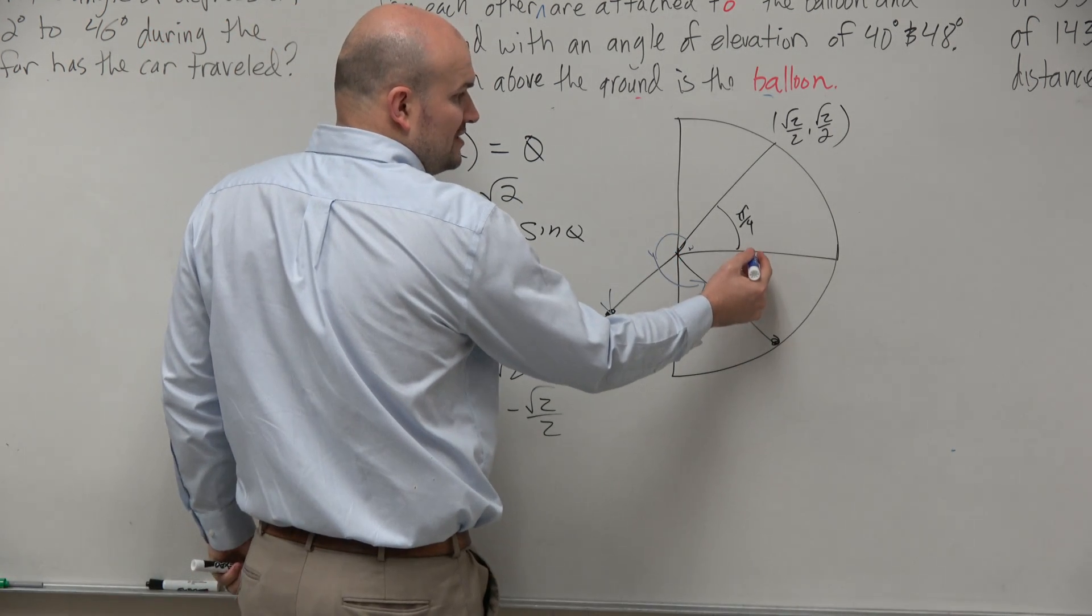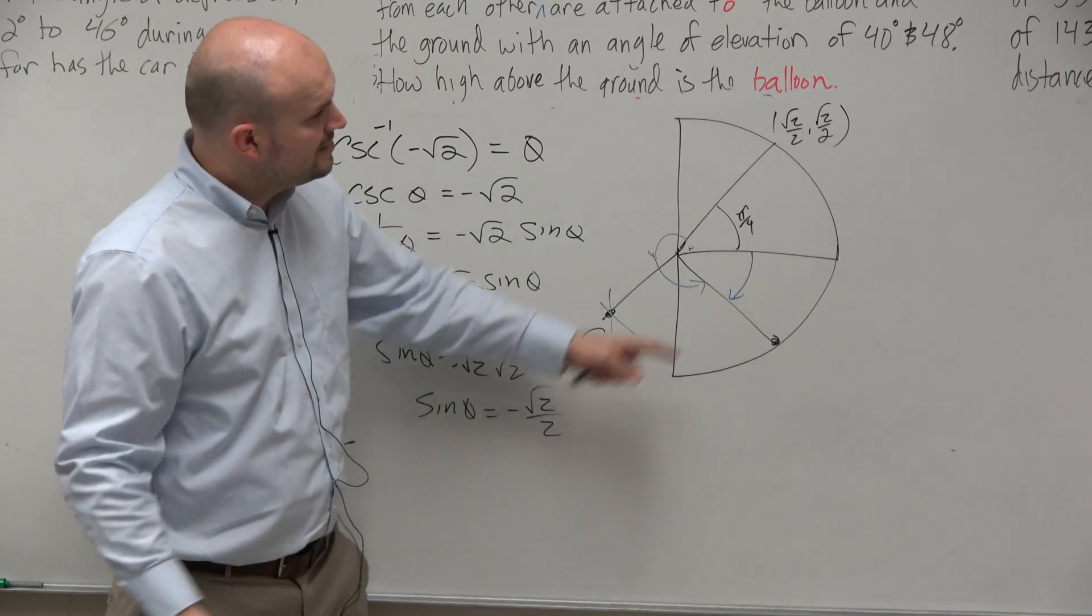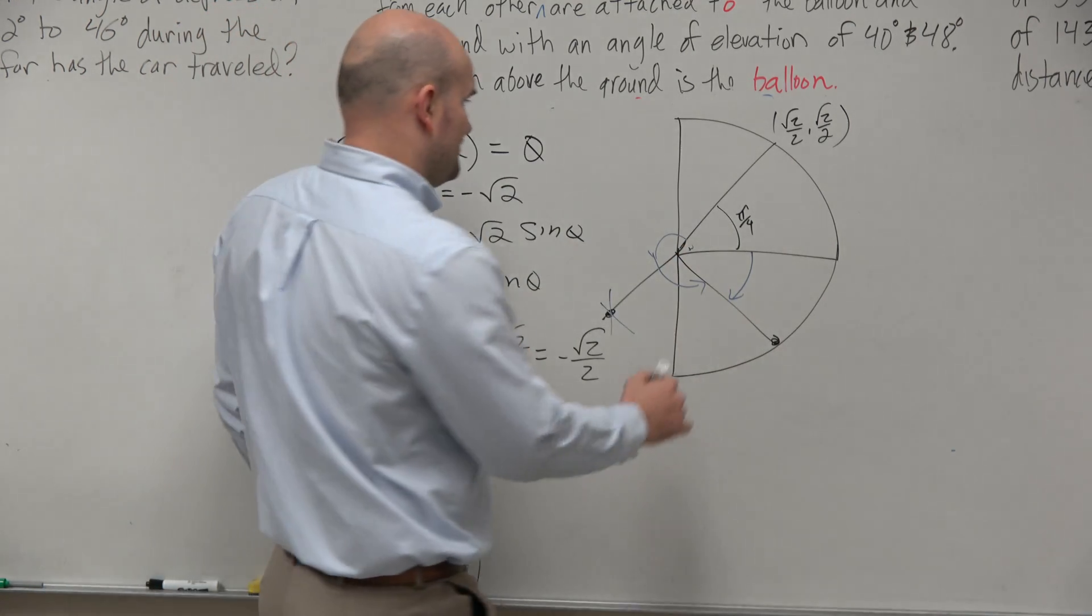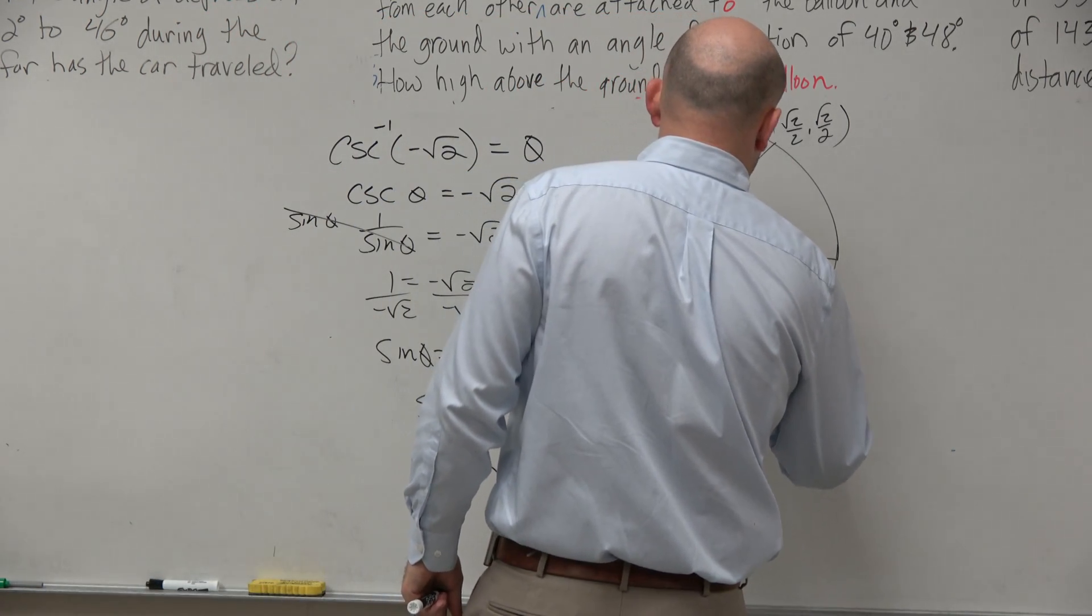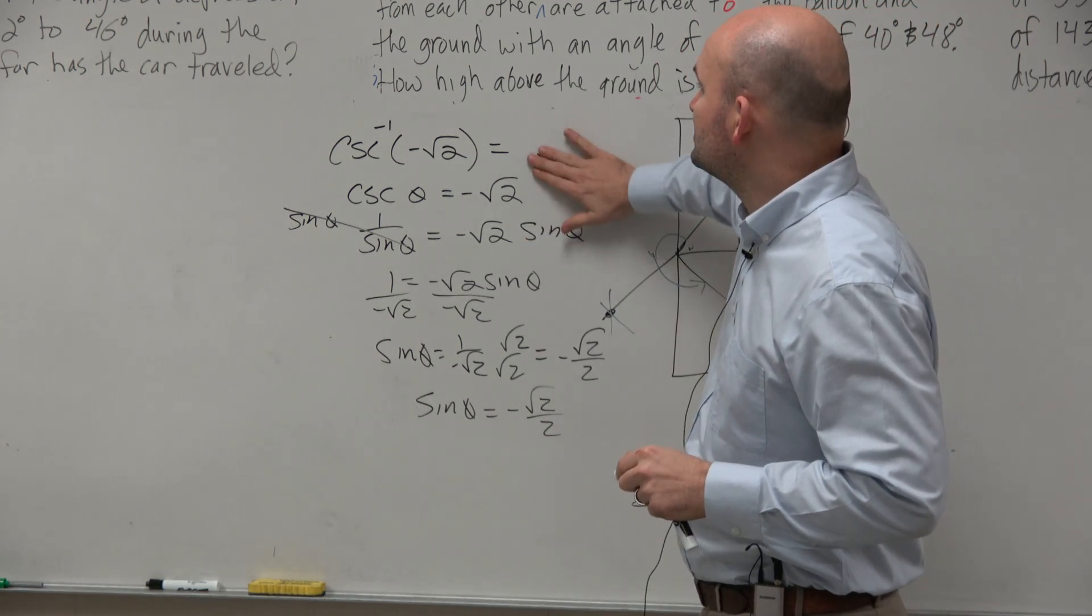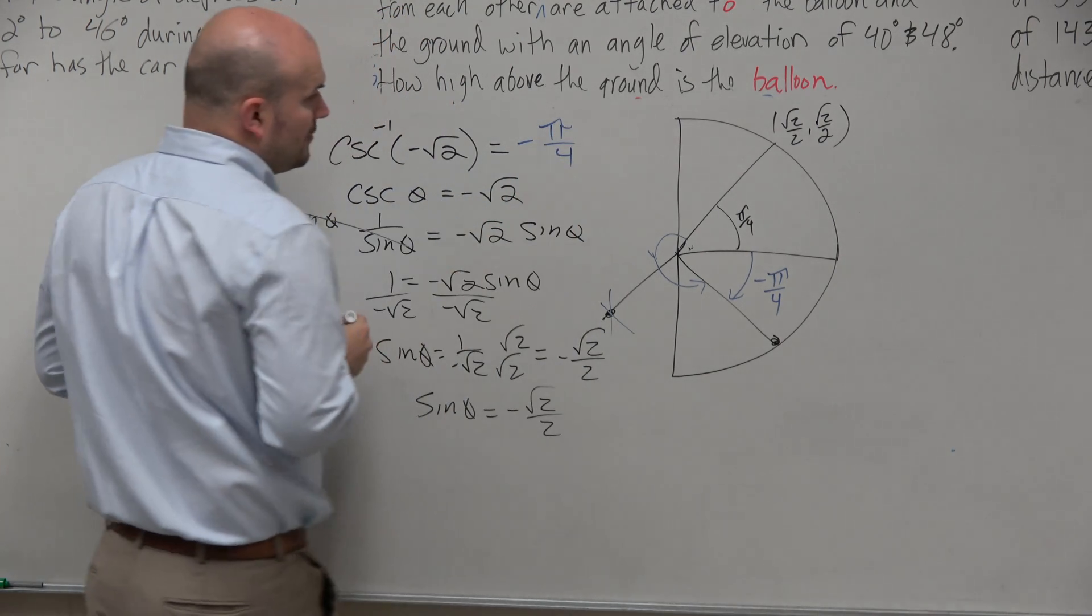However, we can find a coterminal angle and just directly go there in the negative direction. So obviously, from here to here is π over 4. Then from there to there is just going to be negative π over 4. So the cosecant inverse of negative √2 is just equal to negative π over 4.